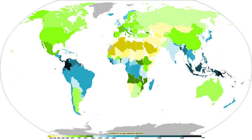Stratiform or dynamic precipitation occurs as a consequence of slow ascent of air in synoptic systems, such as over surface cold fronts, and over and ahead of warm fronts. Similar ascent is seen around tropical cyclones outside of the eyewall, and in comma-head precipitation patterns around mid-latitude cyclones. A wide variety of weather can be found along an occluded front, with thunderstorms possible, but usually their passage is associated with a drying of the air mass. Occluded fronts usually form around mature low-pressure areas.